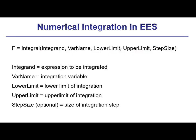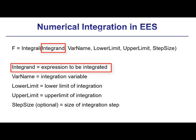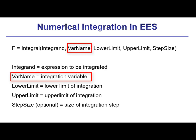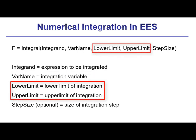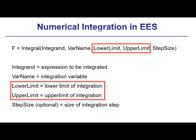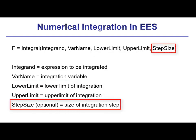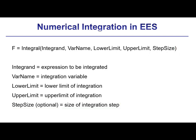The equation-based integral command requires four arguments and allows an optional fifth argument. The four required arguments are: the integrand, which is the EES variable or expression we're trying to integrate; VAR name, which is the integration variable; and then lower limit and upper limit, the limits of integration. The optional fifth argument, step size, provides the duration of the time step to be used in the integration. If the step size argument is not provided, an adaptive step is taken, which will be covered in a subsequent video.